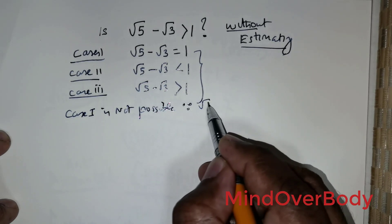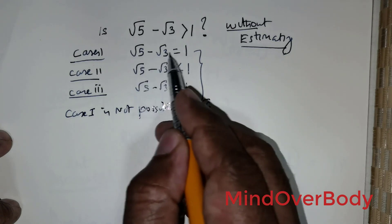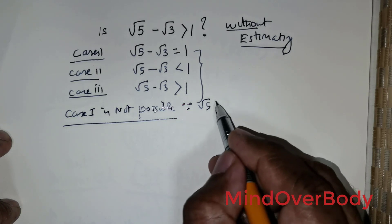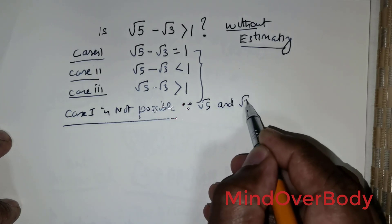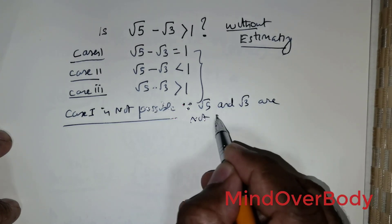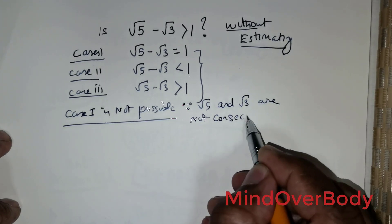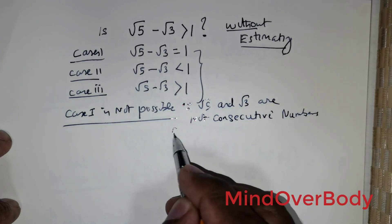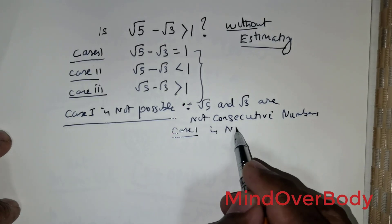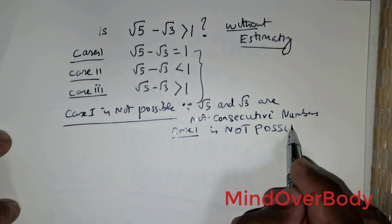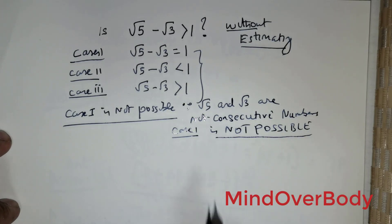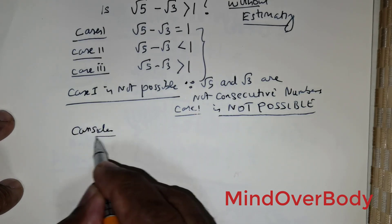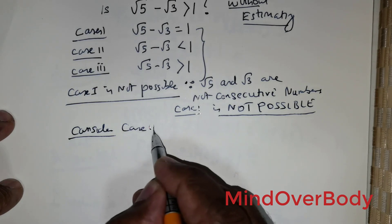Clearly, Case 1 is not possible. For Case 1 to exist, root of 5 and root of 3 would need to be consecutive numbers. Since root of 5 and root of 3 are not consecutive numbers, Case 1 is not possible.